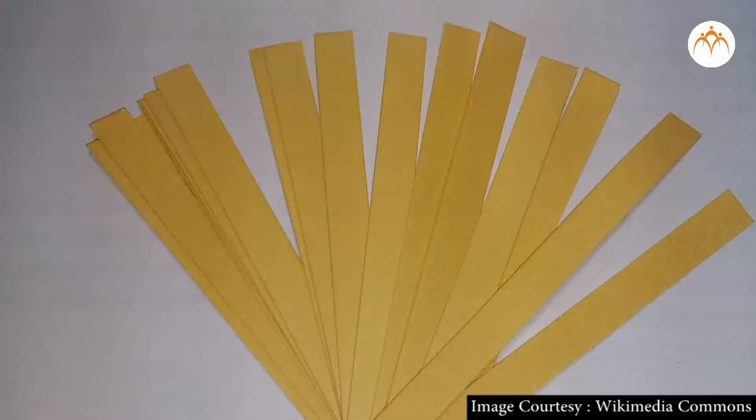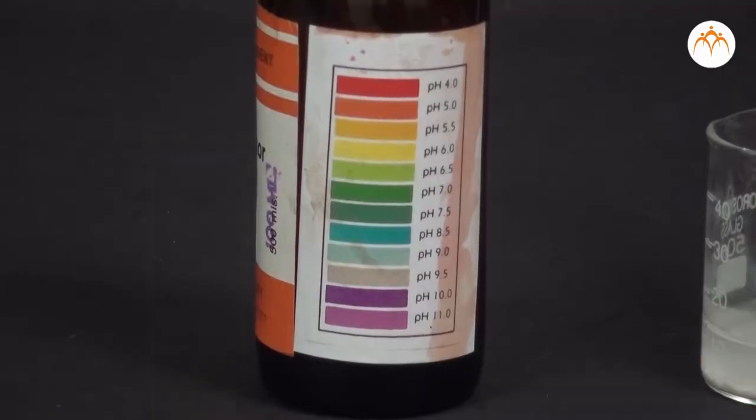By using pH paper, universal indicator, or pH meter we can measure pH of any aqueous solution. Color change helps us to measure pH of solution.